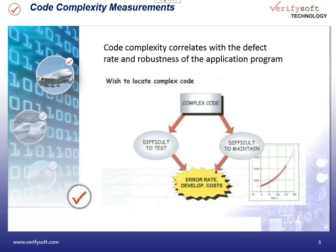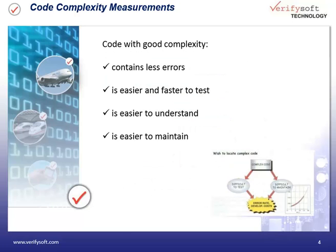The code complexity correlates with the defect rate and robustness of an application. Complex code contains probably more errors than code with a low complexity. Code which is too complex is also difficult to test and to maintain. Testbed CMT++ and CMT Java helps you to write code with a good complexity. This code contains probably less errors, it is easier and faster to test, easier to understand and easier to maintain. A good complexity saves money.